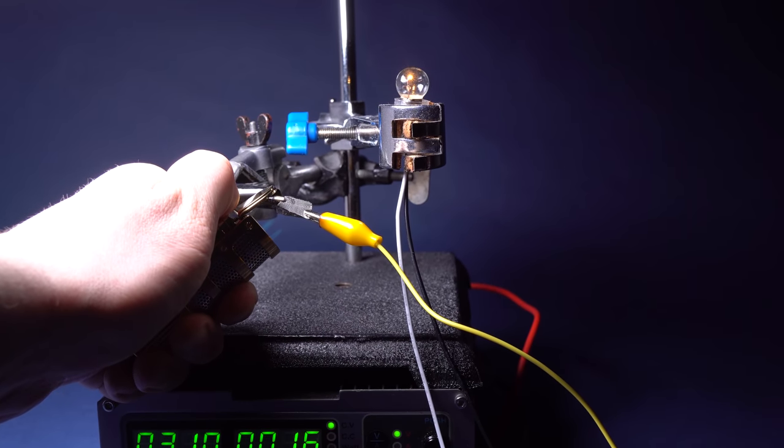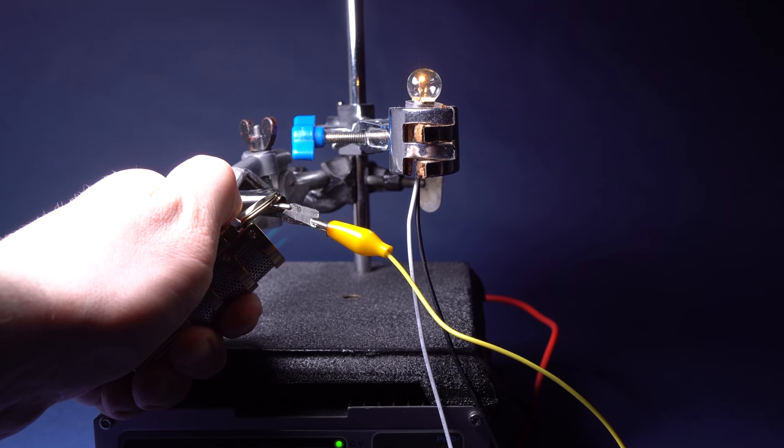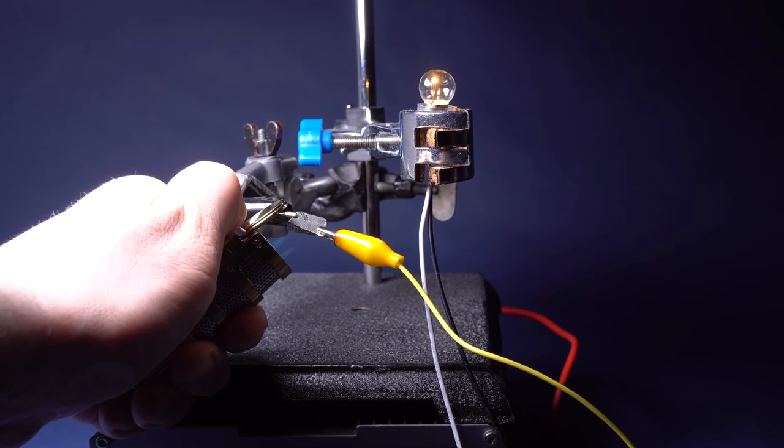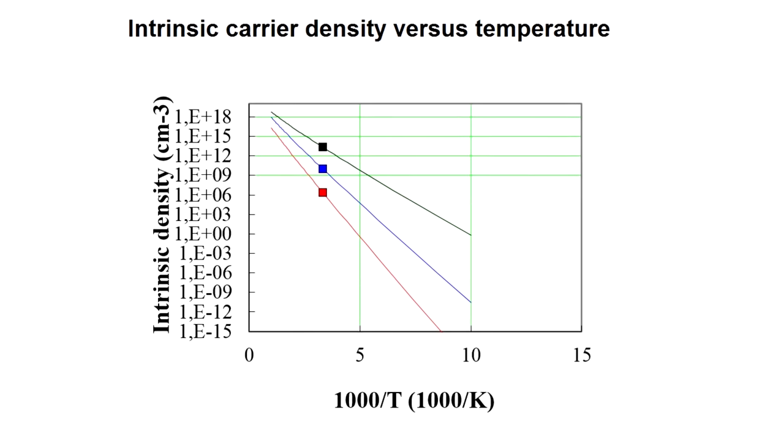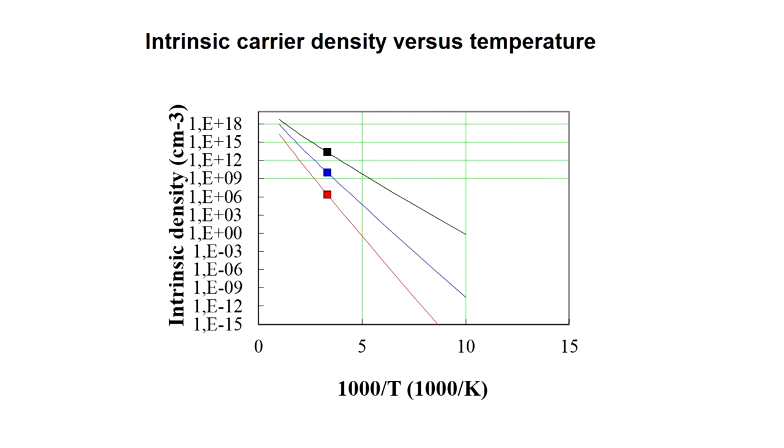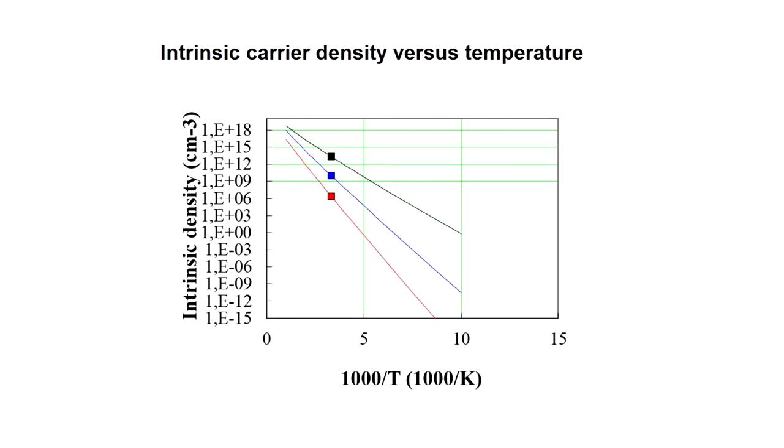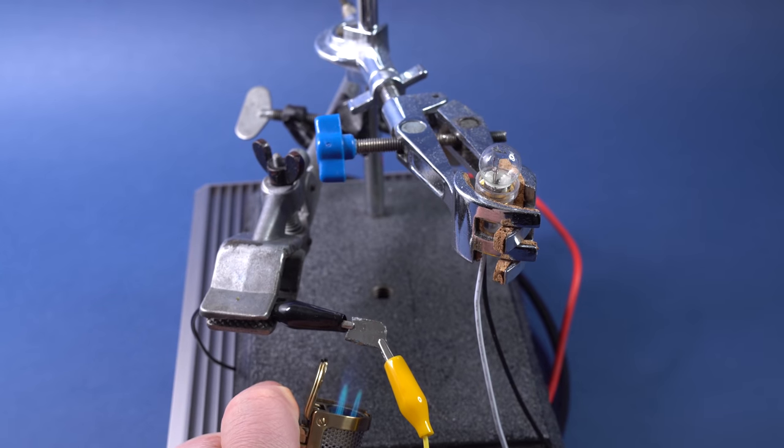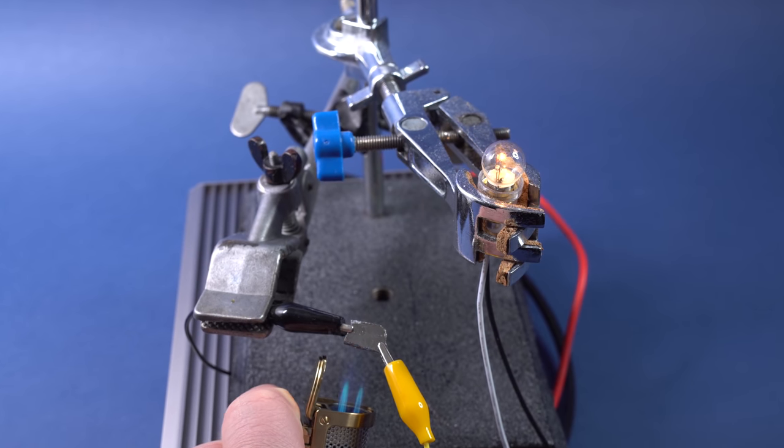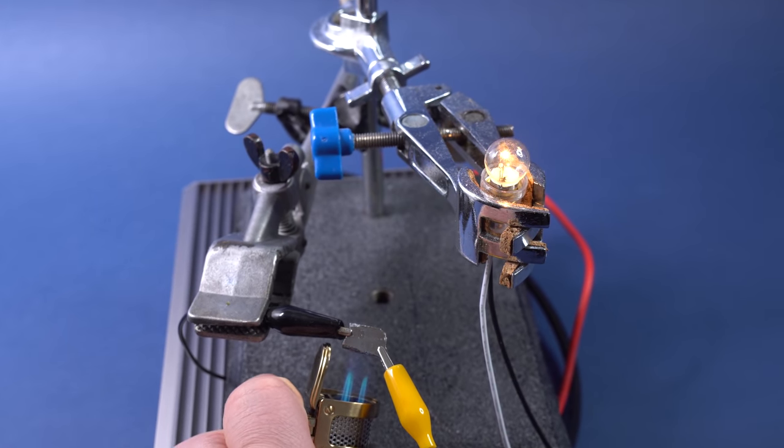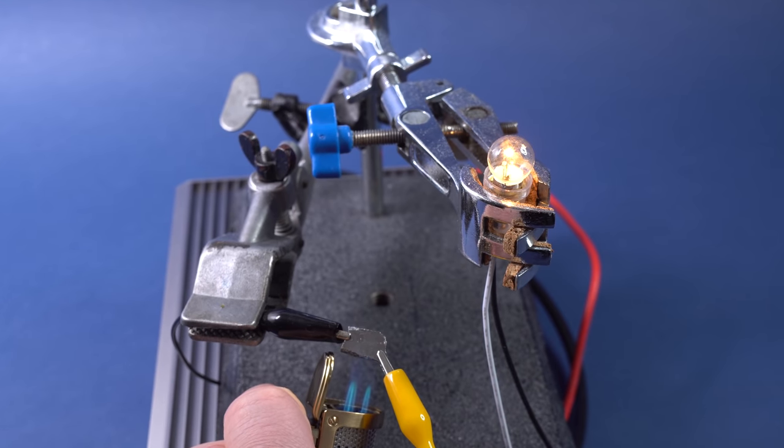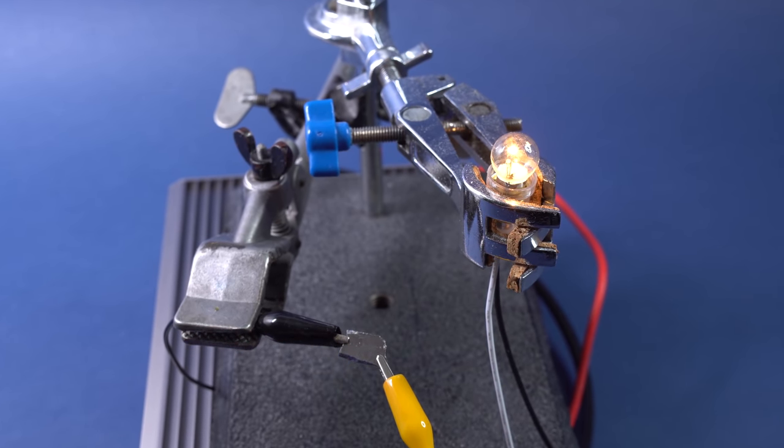This happens because unlike metals, which are good conductors of electricity, semiconductors have what's known as an energy gap, which prevents electrons from moving in the material. The kinetic energy of the electrons increases, which increases the number of electrons capable of overcoming the potential barrier.